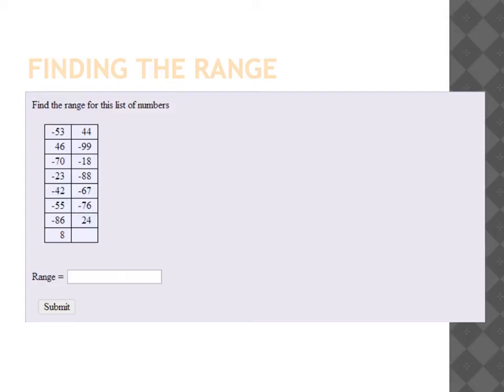For our last example, what we're going to do is find the range of a set of numbers. And again, going back to our definition, a range is the highest number minus, or subtract, the smallest given number in a set of data. In this case, your smallest number, you need to be careful. Your smallest number may actually be a negative number. And that is the case here.